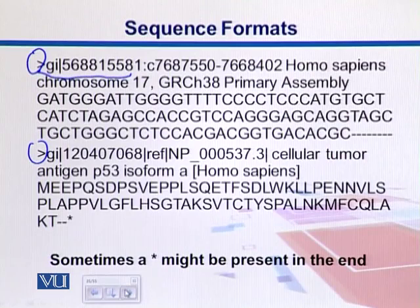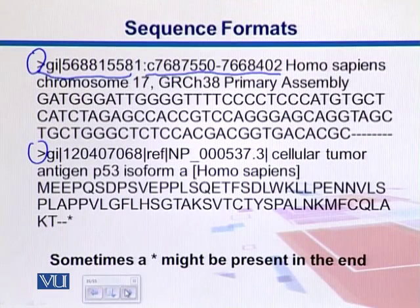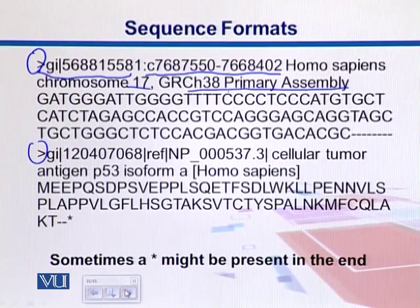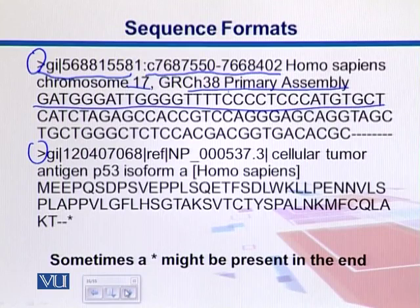The 'C' in the header indicates it's coming from the complementary strand, and the base positions designate the regions from which the gene is located. There is also a short description stating it comes from Homo sapiens, chromosome 17, in the primary assembly. Assembly is where short sequence reads are put together into a gene. The actual sequence starts here with around 60 base pairs per line.